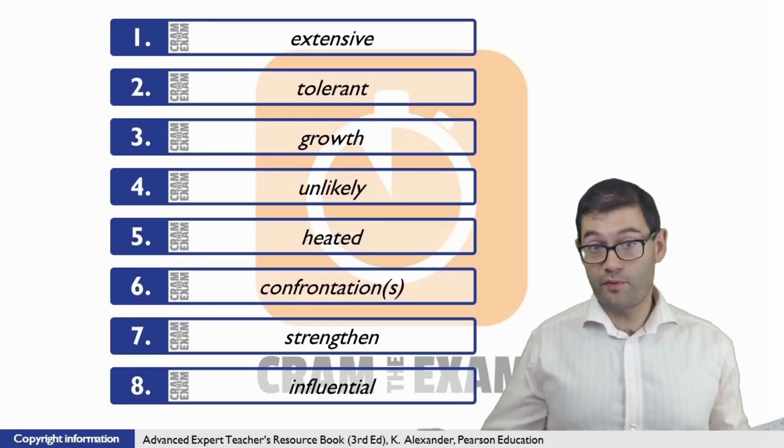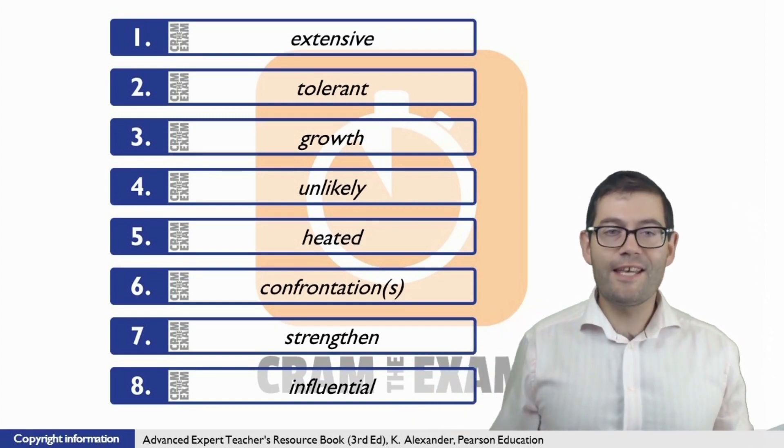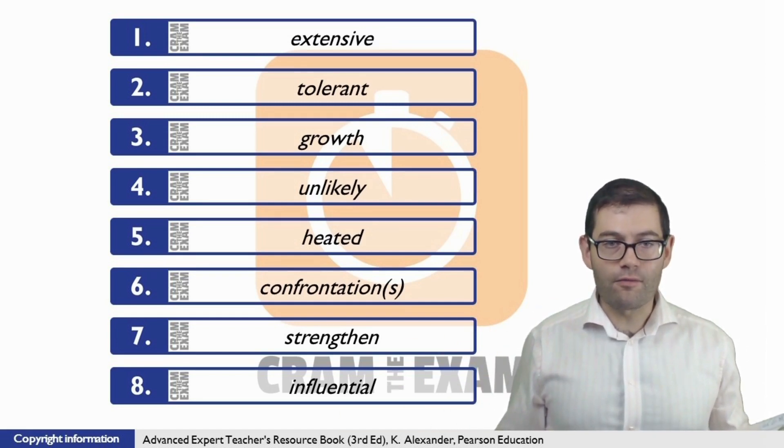For question number one, we can see that we've got the article before the gap, and then after the gap we've got the noun to which that article refers, which means that we need an adjective to qualify, to modify that noun. What is the adjective form of the stem word extend? It is extensive.